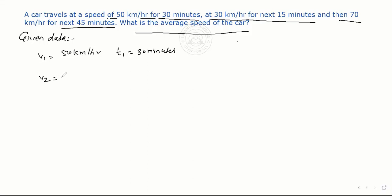V2 is given as 30 kilometer per hour. The car speed slows down to 30 kilometer per hour for the next 15 minutes. Then again the car speed increases to 70 kilometer per hour.